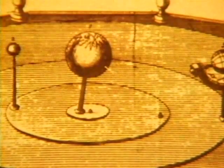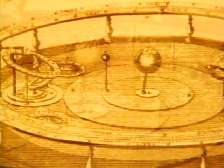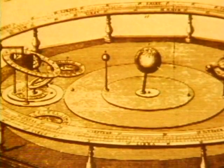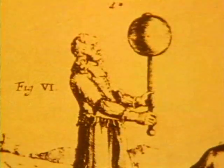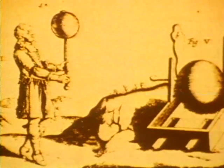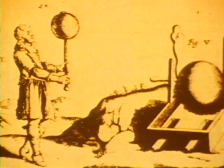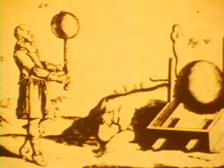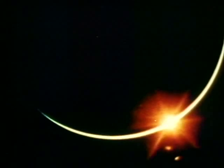Other scientists wanted to test this idea by measuring the attraction between two objects. But this was hard to do, because the attraction of gravity is very weak compared to the attraction of magnets or static electricity. That's why we usually only notice it when one of the objects is very big, like the Earth or the Sun.